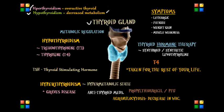With hyperthyroidism, there is an overactive thyroid, which is why it's called hyper — a high-functioning metabolism. In contrast, hypothyroidism results in a decrease in metabolism, and this is due to the hyposecretion of the thyroid hormones, specifically T3 and T4.